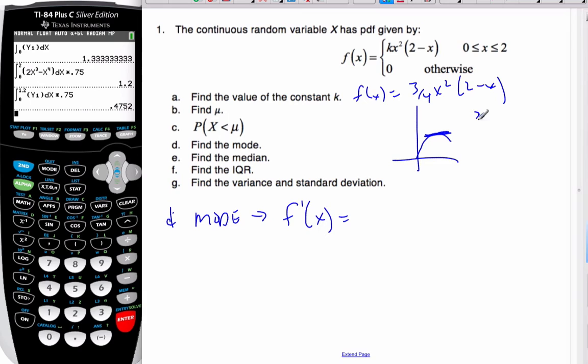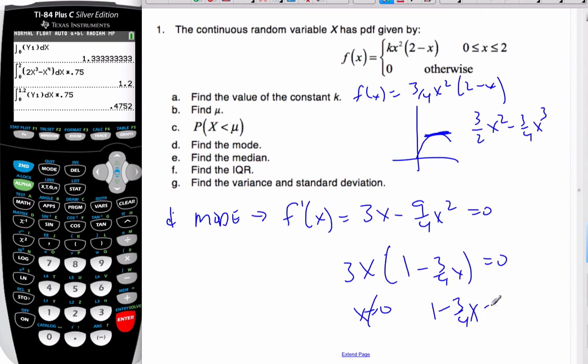And if I simplify this, it's 3 halves x squared minus 3 quarters x cubed. So taking the derivative, I get 3x minus 9 over 4 x squared. Set it equal to 0. I can factor out the x or even a 3x and left x minus 3 quarters and left with 1 minus 3 quarters x equal to 0. Well, x could be 0, which doesn't make sense.